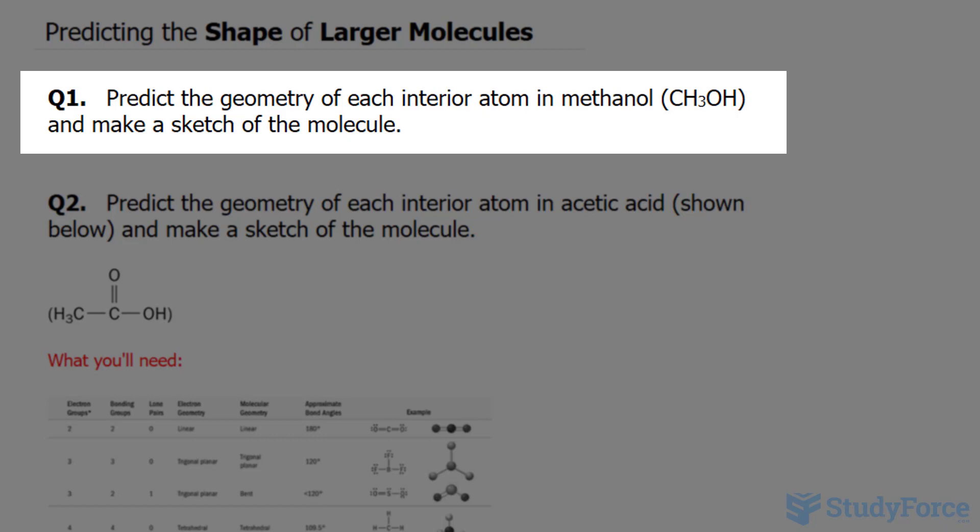So in question number one we're asked, predict the geometry of each interior atom in methanol, which has the chemical formula CH3OH, and make a sketch of that molecule.